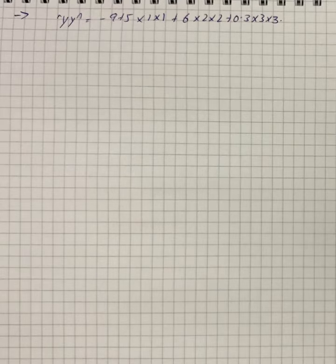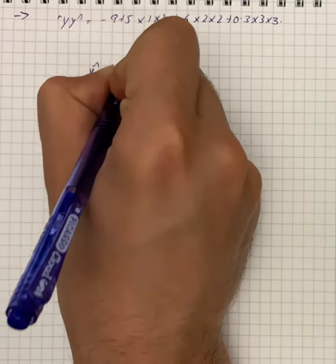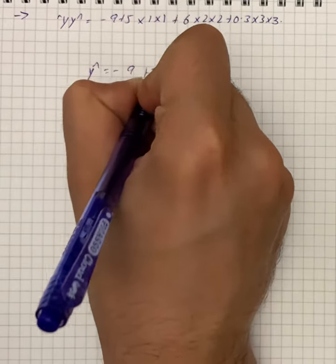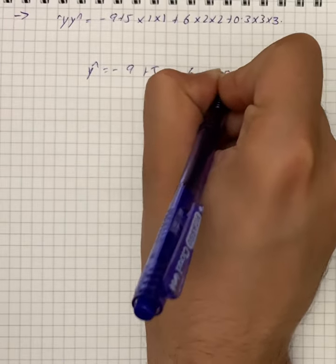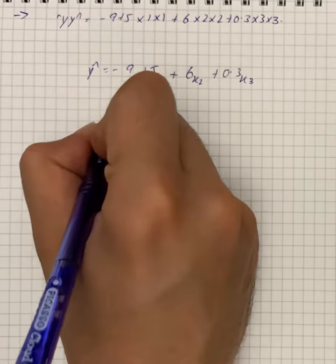So we have ŷ is equal to -9 + 5x₁ + 6x₂ + 0.3x₃. So we can write this out.